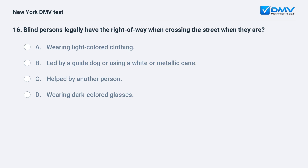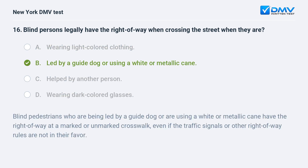Blind persons legally have the right of way when crossing the street when they are: A. Wearing light-colored clothing. B. Led by a guide dog or using a white or metallic cane. C. Helped by another person. D. Wearing dark-colored glasses. The answer is B. Blind pedestrians who are being led by a guide dog or using a white or metallic cane have the right of way at a marked or unmarked crosswalk, even if traffic signals or other right-of-way rules are not in their favor.